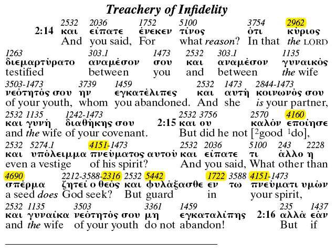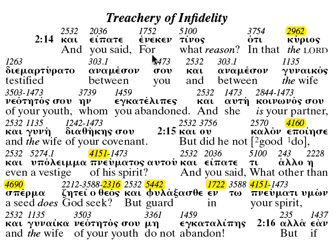In verse 14: and you said, 'for what reason?' God says: the Lord testified between you and between the wife of your youth, whom you abandoned. They're abandoning the precepts of God, and he uses the covenant of marriage as an example — she is your partner and the wife of your covenant.